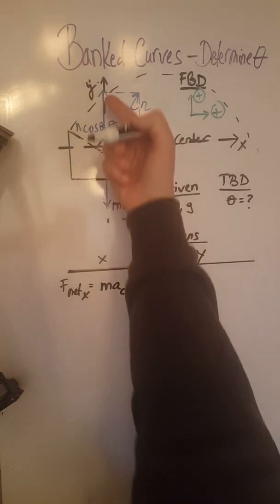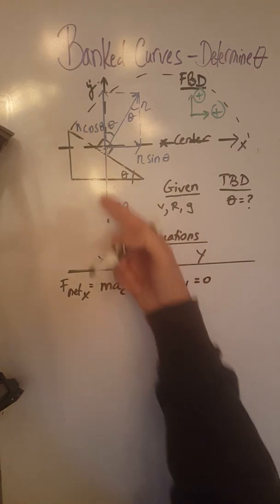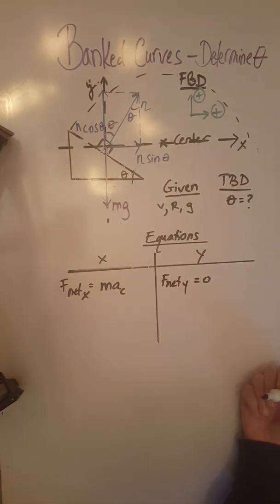And for y we have two forces, so F net y will have to equal zero because these two forces are balanced. So let's go ahead and continue developing these equations.